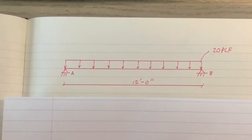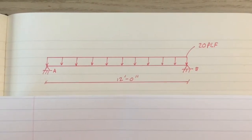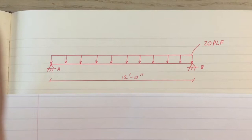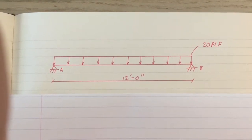First, as you can see, we have a distributed load of 20 pounds per linear foot across a beam 12 feet long.